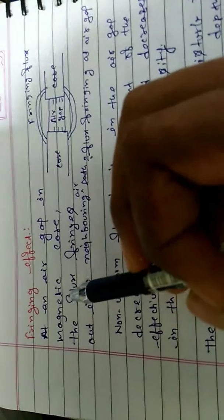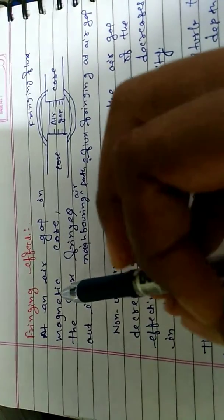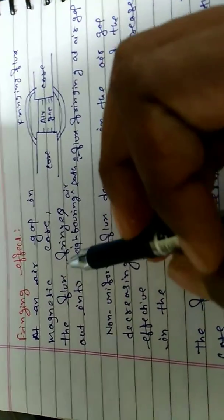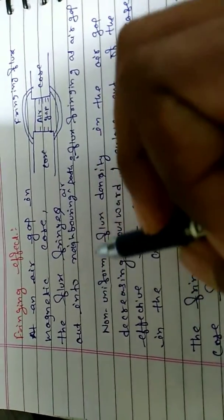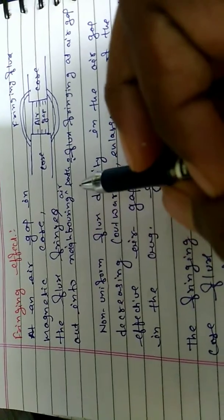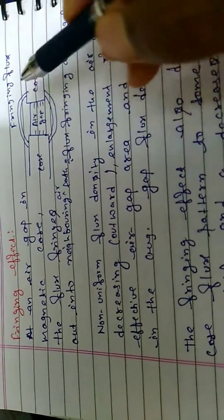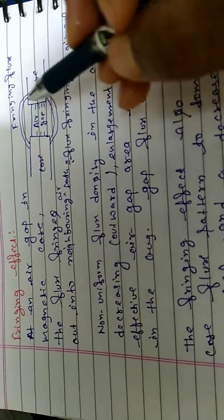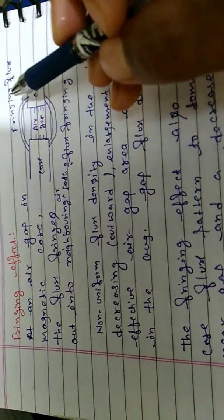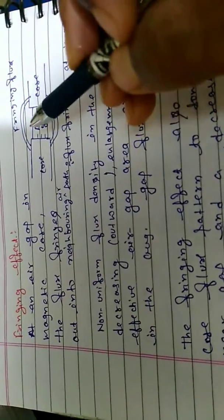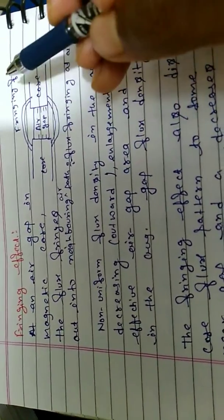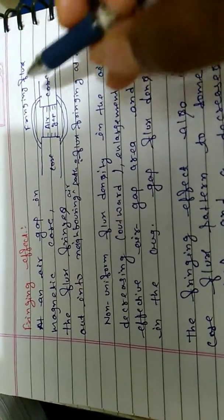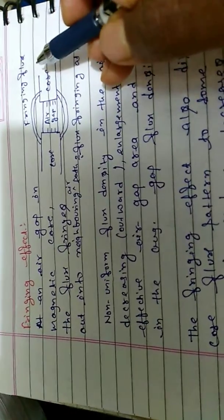First we will see the definition. At an air gap in a magnetic core, the flux fringes out into the neighboring air path. Due to this air gap, our flux is passed out, and then it is called fringing flux.